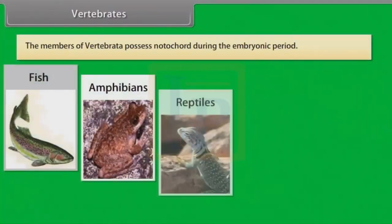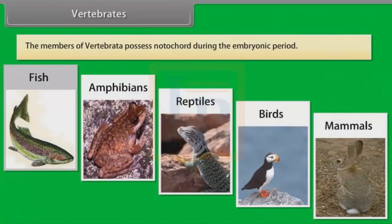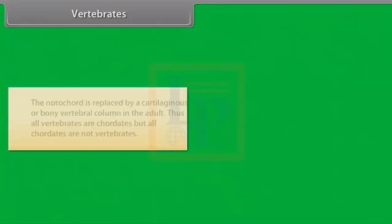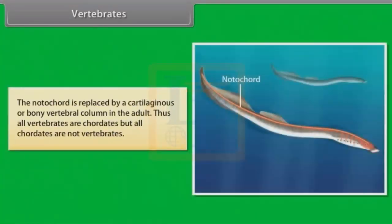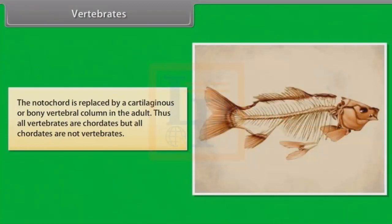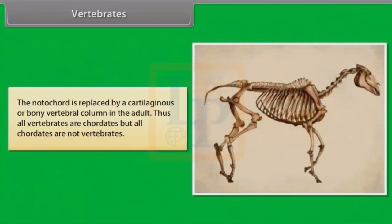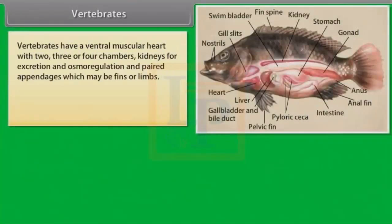The members of Vertebrata possess notochord during the embryonic period. The notochord is replaced by a cartilaginous or bony vertebral column in the adult. Thus, all vertebrates are chordates, but all chordates are not vertebrates. Vertebrates have a ventral muscular heart with two, three or four chambers, kidneys for excretion and osmoregulation, and paired appendages which may be fins or limbs.